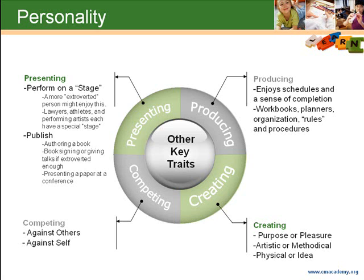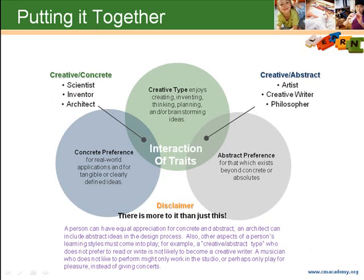Putting it all together: as noted before, one's learning style is comprised of many parts, and it is the unique combination of these parts that makes up each unique person. For example, a creative type who has a preference for the concrete might be a scientist, inventor, or architect. Meanwhile, a creative type that prefers the abstract might be an artist, creative writer, or philosopher.